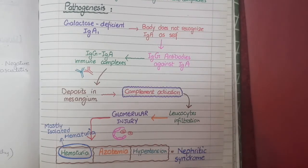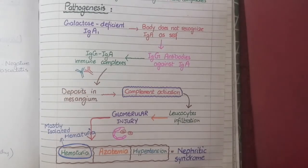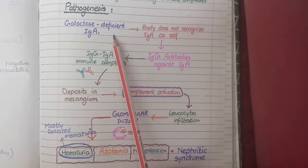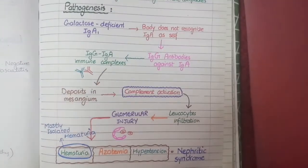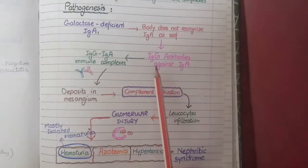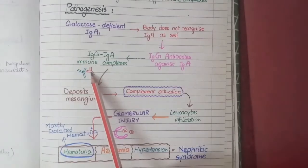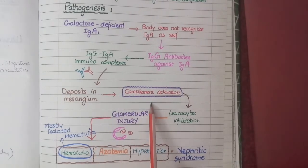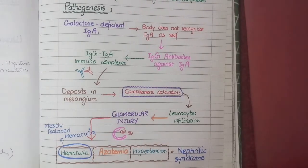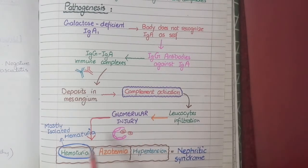To review the pathogenesis: in IgA nephropathy, IgA antibodies are galactose deficient, so the body does not recognize them as self and the immune system develops IgG antibodies against them. These IgA-IgG complexes deposit in the mesangium and cause complement activation, which recruits leukocytes to the glomeruli, and the resulting glomerular damage causes hematuria.